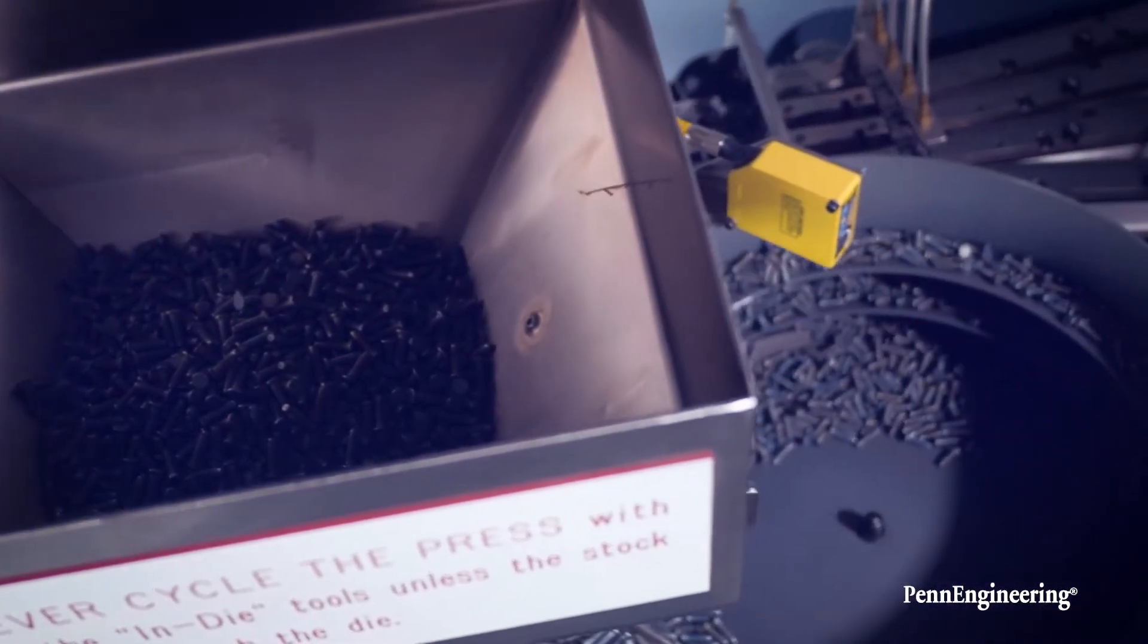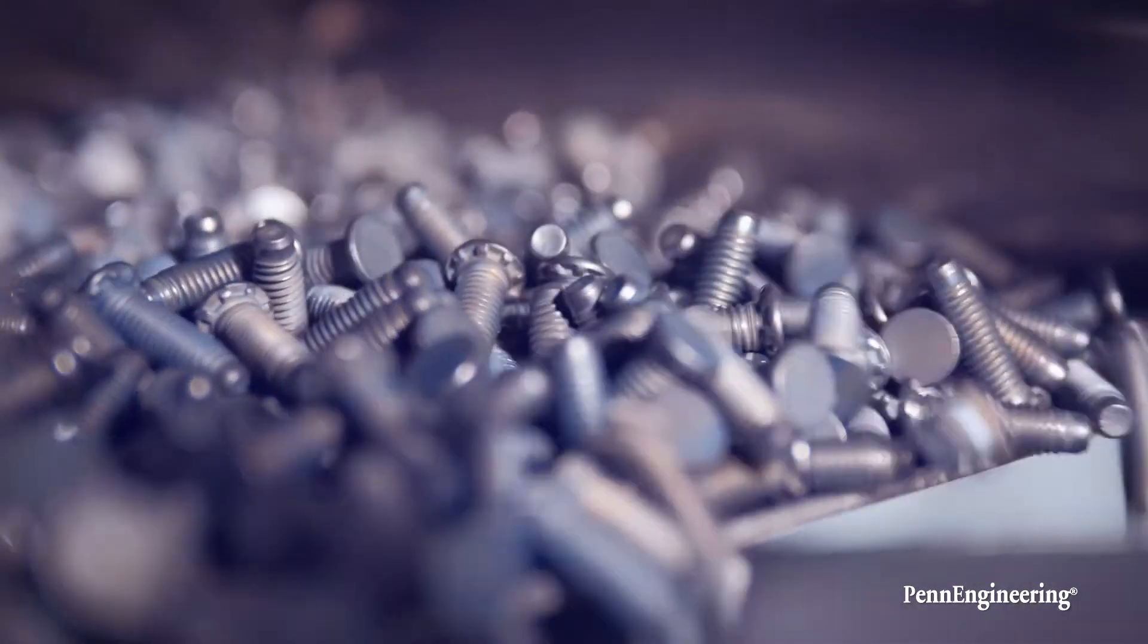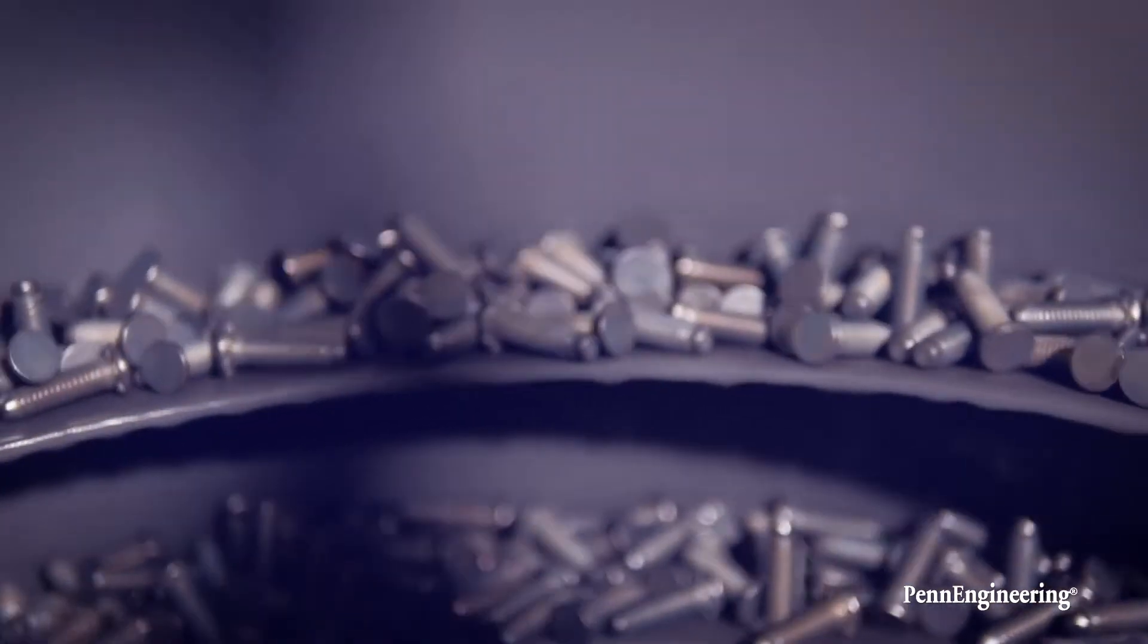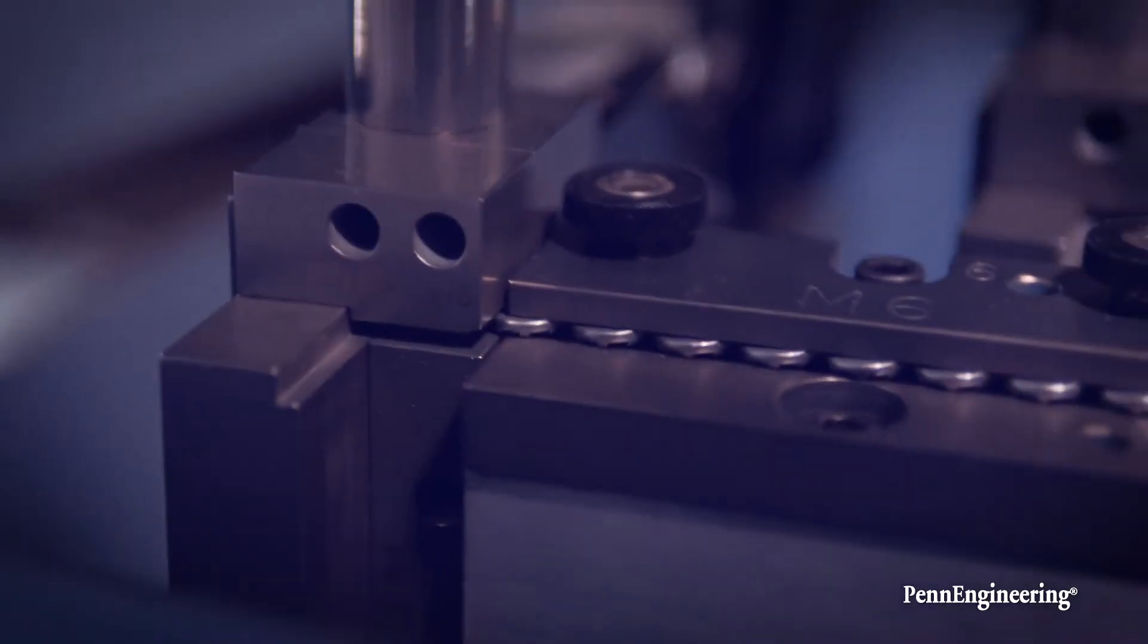The fastener's journey through the system starts in the hopper, which is used for bulk fastener storage. It then moves into the bowl where it is oriented and transitions to the inline tracks where fasteners are separated and fed individually by a shuttle mechanism to the INDIE tooling located in the die.